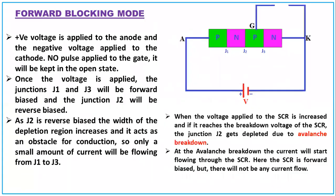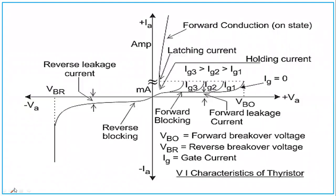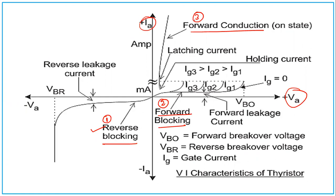This is the VA characteristic of the SCR which you should draw in your exam. It is a plot of anode voltage VA versus the current passing through the SCR. You can see the reverse blocking mode, the forward blocking mode, and the forward conduction mode. VBO is the forward breakover voltage, VBR is the reverse breakover voltage, and IG is the gate current being supplied.